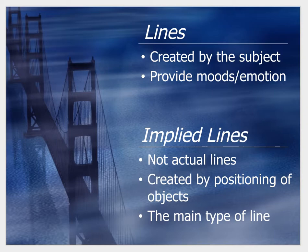Implied lines are not actually there. It's like a person pointing off a cliff — your mind automatically extends the tip of the finger and creates a line.